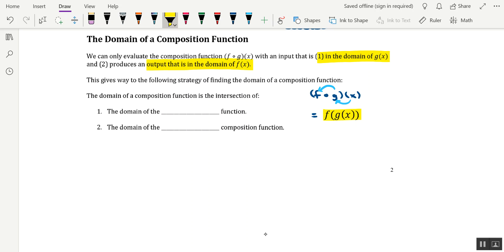So there are going to be some cases where it's okay to plug a number into g of x, but the output that it produces is not an okay number to plug into f of x. So for this reason, there are two things that we want to keep at the forefront of our minds when finding the domain of a composition function. The domain of a composition function ends up being an intersection, and the intersection is between two number lines, and the first of those number lines is the domain of what I like to call the inner function. And in this case, that would be g of x.